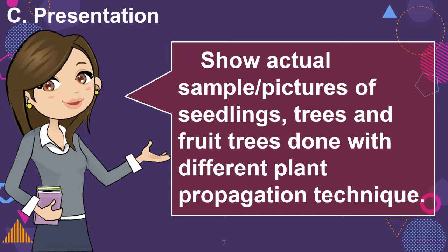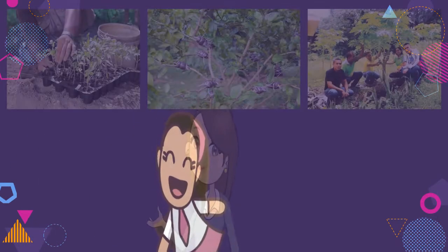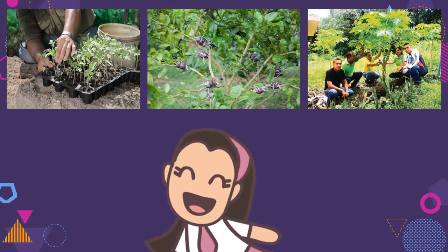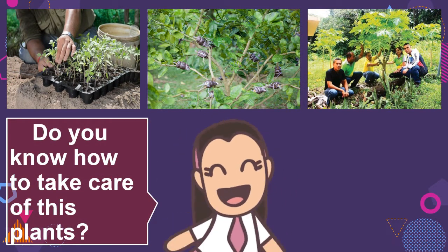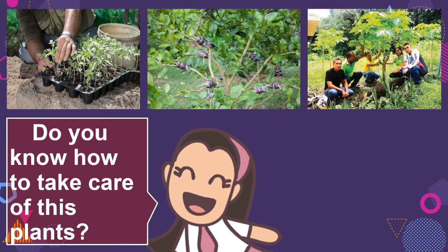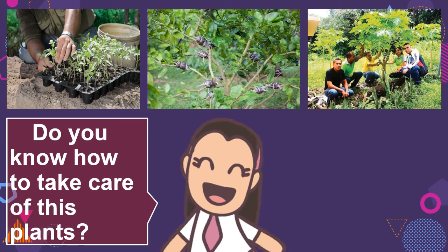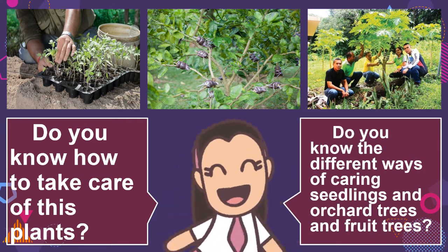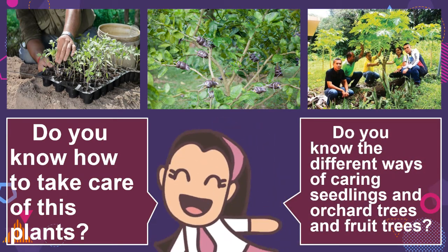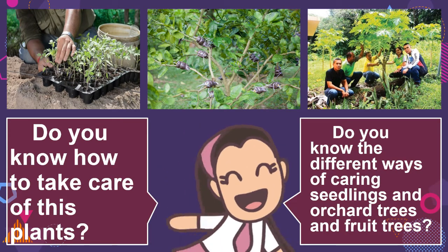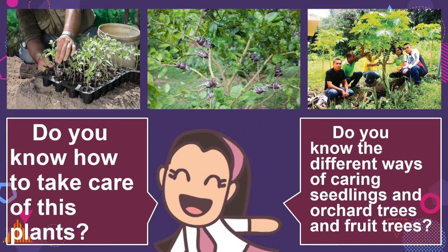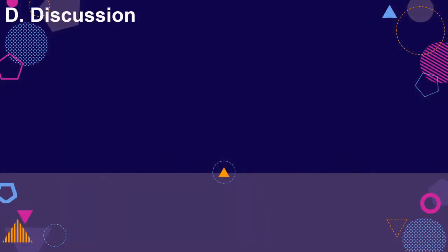C. Presentation: Show actual samples or pictures of seedlings, trees, and fruit trees done with different plant propagation techniques. Do you know how to take care of these plants? Do you know the different ways of carrying seedlings and orchard trees and fruit trees? D. Discussion.